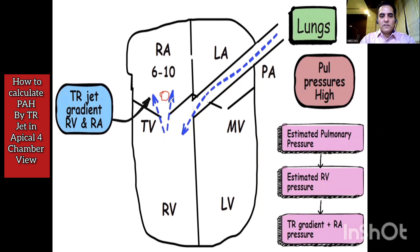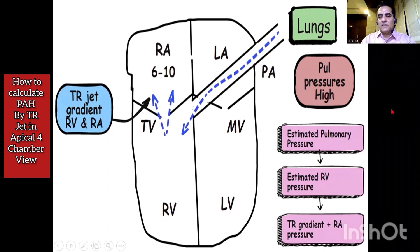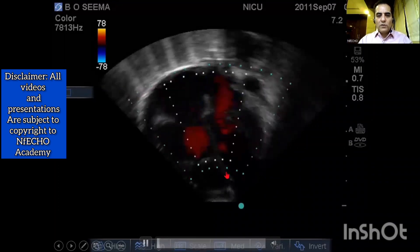The blue arrows show blood flow going from RV to RA. The red circle I have drawn marks where the continuous wave Doppler is placed, just above the tricuspid valve, to calculate the gradient between RV and RA. The residual pressure in the right atrium is around 6 to 10 mmHg. Whatever pulmonary pressures are present are projected by TRZ as RV pressures, and to that we add the right atrial pressure to get the estimated right ventricular pressures.